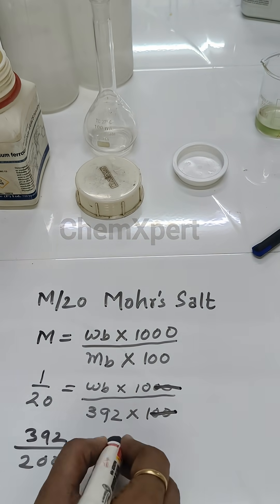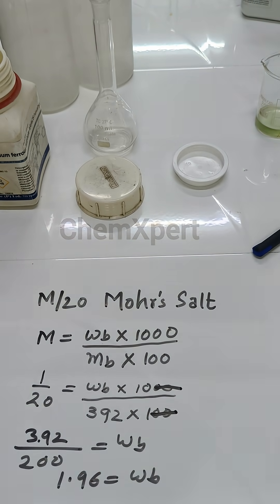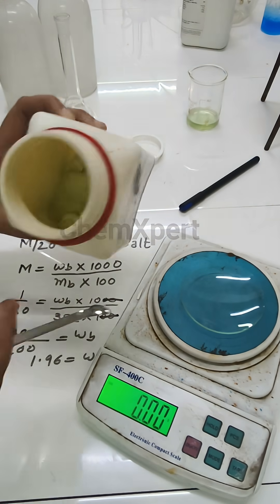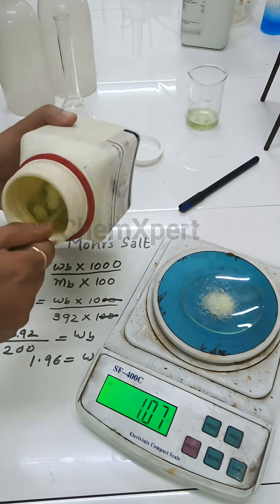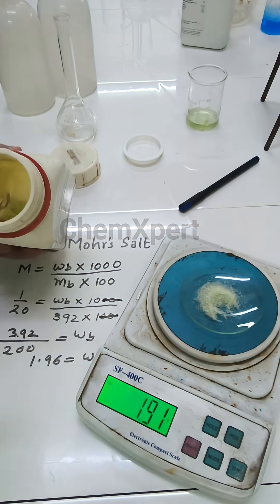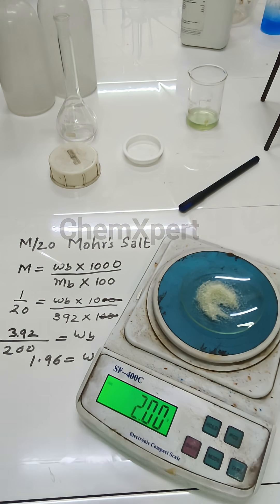On solving this we get the answer here, 1.96 grams. Take the electrical balance. First of all, tare it by making the reading 0 here. Then add Mohr salt and we have to weigh till 1.96 grams. Again adding it, and then we get the perfect reading here, 1.96.